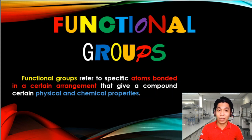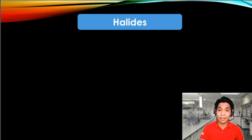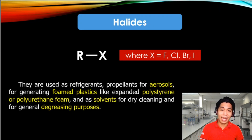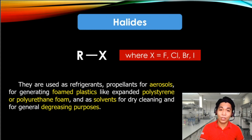Let's identify what these functional groups are in this video. The first in our list are the halides. Halides have a structure of an R bonded to an X, where R represents a carbon atom and X represents any halogen such as fluorine, chlorine, bromine, and iodine. Most organic compounds with halides are used as propellants, solvents, and many other functions.